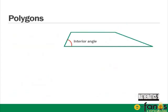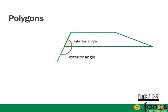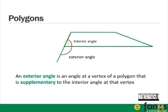An exterior angle is an angle at a vertex of a polygon that is supplementary to the interior angle at that vertex. Supplementary means that the two angles add up to 180 degrees, or in other words, they lie on a straight line.